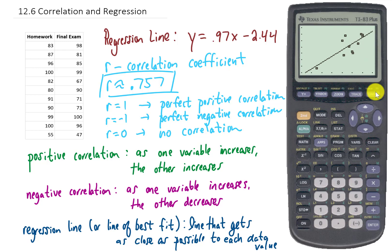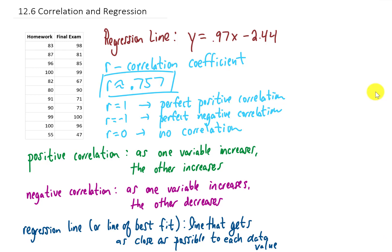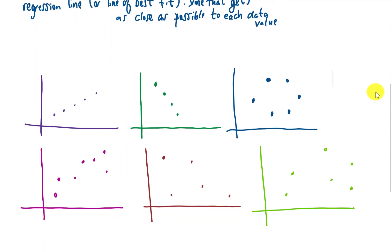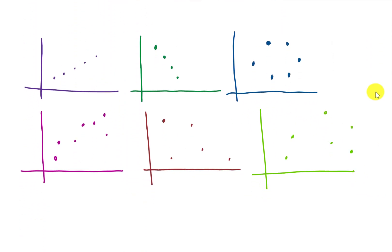To give you a slightly better idea of what these correlation coefficient values might be, let's look at a couple of random graphs of data. For this first graph, you can see that all of these data points fall on what looks like a perfect line. So our R value is going to be positive 1 because the slope of that line is positive.